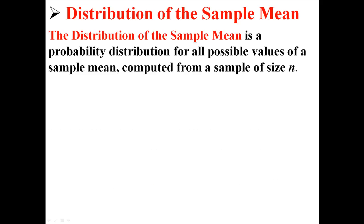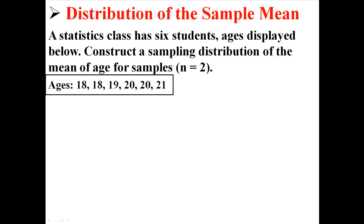The distribution of the sample mean is a probability distribution of all possible values of a sample mean computed from a sample of size n. That sounds very complicated, so let me give you an example. A statistics class has 6 students with the ages displayed below. Construct a sampling distribution of the mean age for samples with a size of 2.